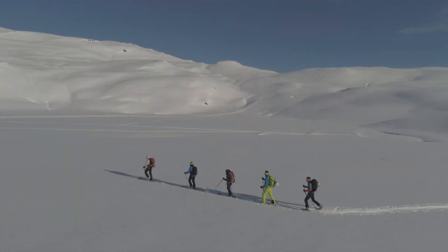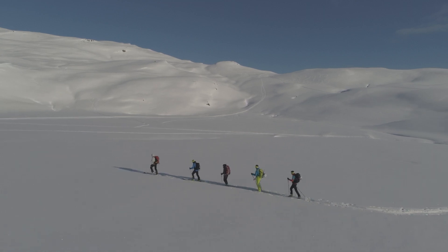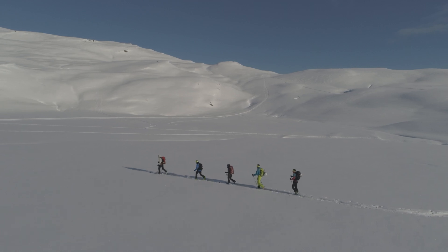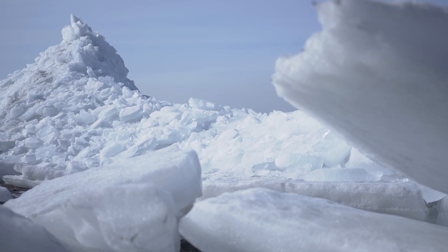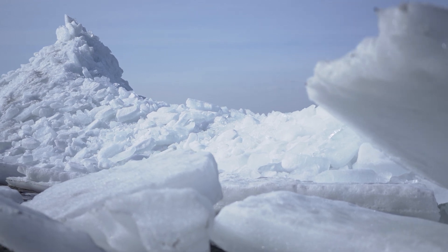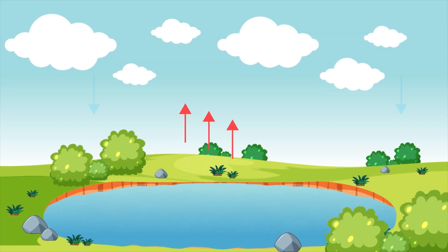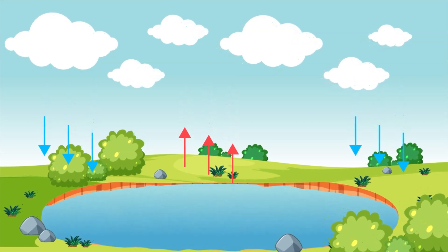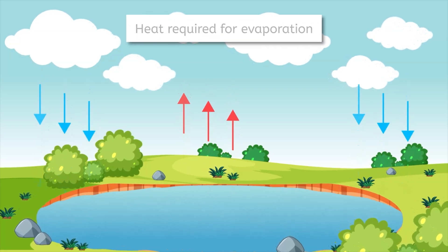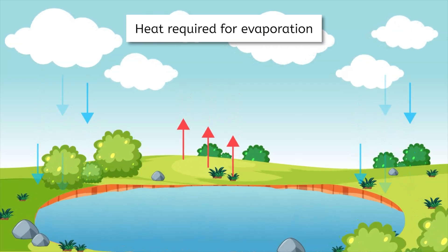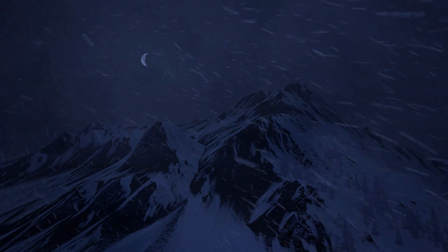At both poles, it's incredibly cold. What do you think that means about precipitation? Do they get rain? Not likely. In fact, they don't get much precipitation at all. Do you remember why? Think about the water cycle. Remember that it turns slowly when temperatures are cold, because heat energy is required for molecules to evaporate. Any precipitation that does fall here falls as snow.